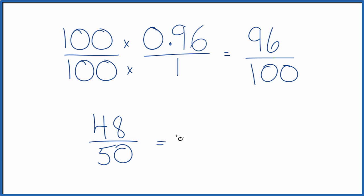But it's still even, so we can do it again. 48 divided by 2 is 24. And 50 divided by 2 is 25.